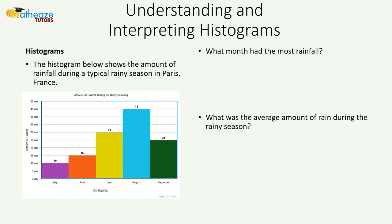Let's look at some examples. The histogram below shows the amount of rainfall during a typical raining season in Paris, France. We're going to use this histogram to answer a few questions. What month had the highest rainfall? We just look at the bar with the greatest height — that happened in August. So we had the most rainfall in August.